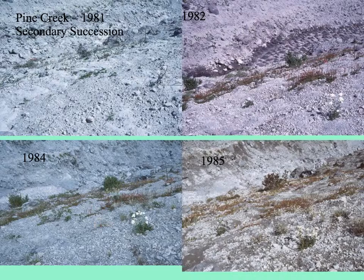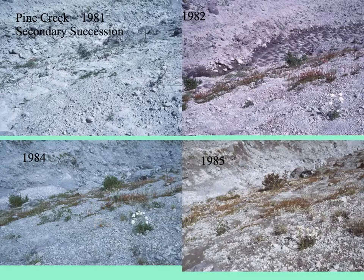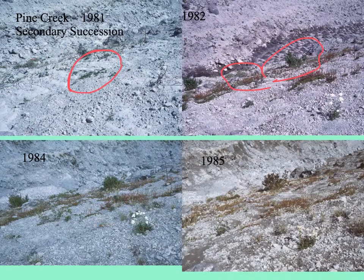At Pine Creek, with a mild scour, even one year later there are some stems of plants visible in the ravine. In 1982 — one year after the eruption — the very same spots show plants getting bigger. Four years later, in 1984, some sizable shrubs. By 1985, you can see in a matter of 10 or 15 years things are getting pretty much back to normal.